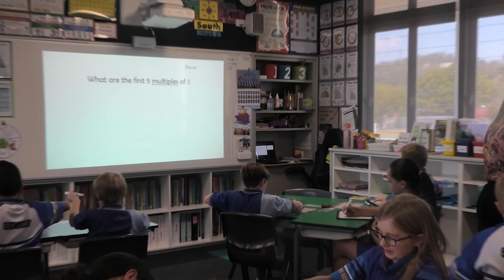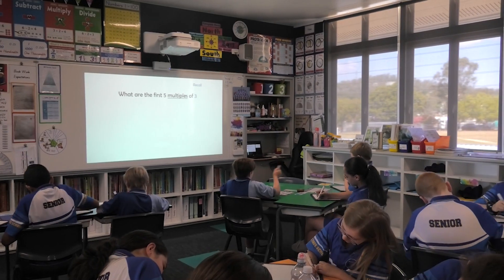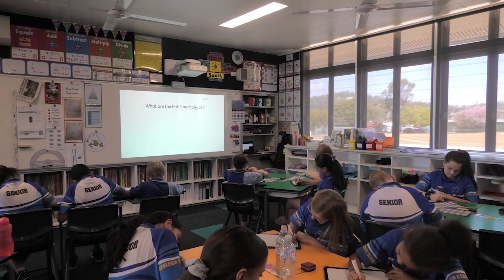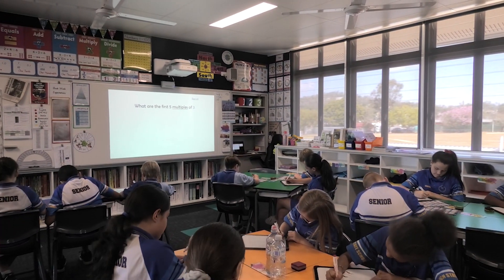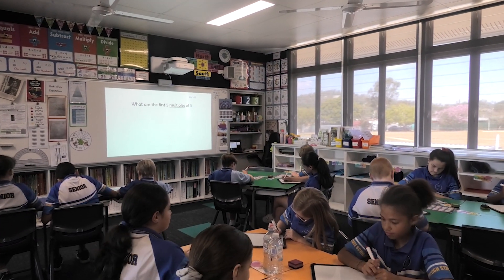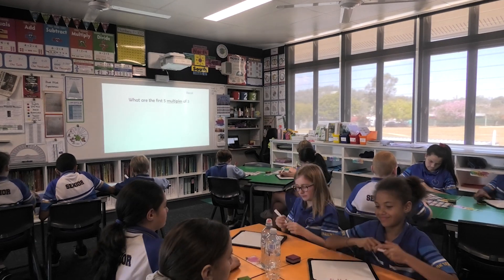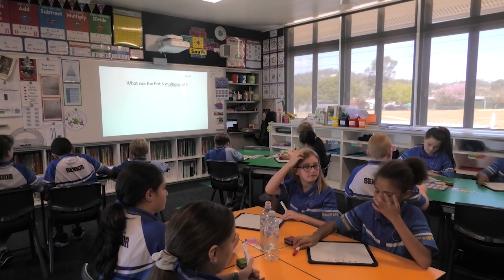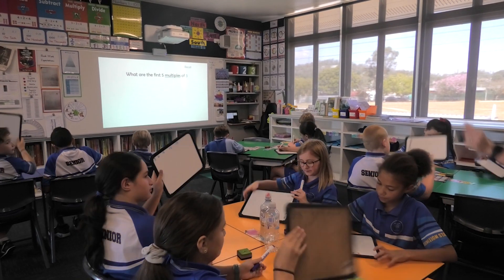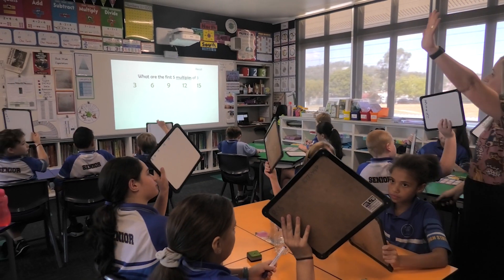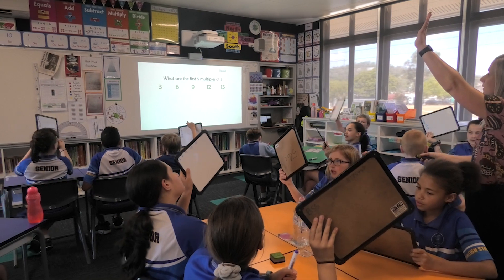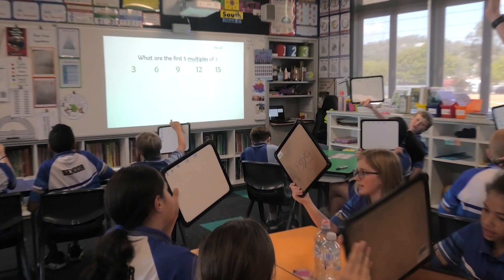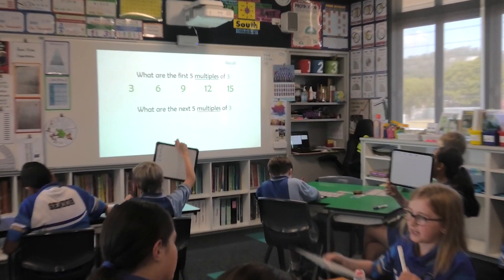The first 5 multiples of 3. If you have a multiplication chart, use that to help you. 5, 4, 3, 2, 1. Boards up. Let's record them together. Let's go. 3, 6, 9, 12, 15.